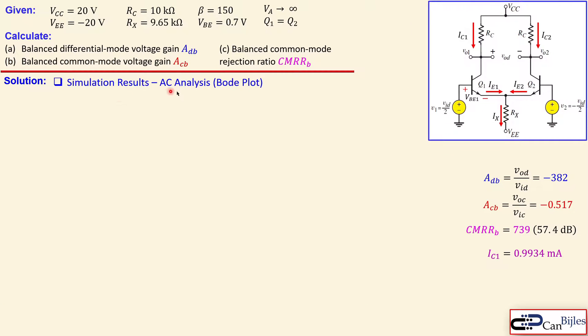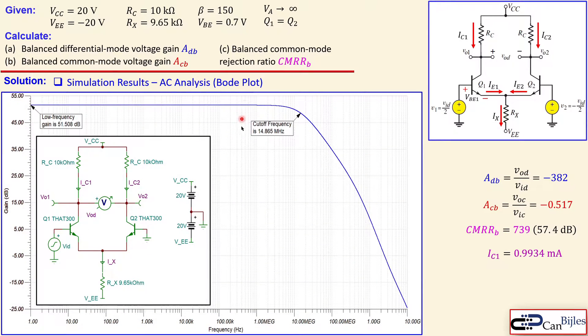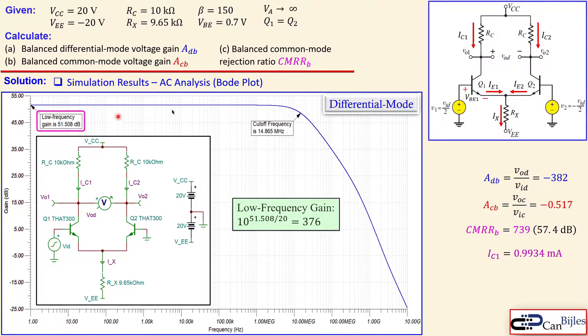Let's go to the simulation results for the AC analysis or the frequency response using the Bode plot. This is the gain for differential mode operation. This is the circuit. What you see is that the low frequency gain is 51.508 dB. There's also a cutoff frequency at approximately 15.9 MHz. If I go from dB to the scalar value, I need to use this formula and that is 376, which is close to 382. So we can say this is perfectly fine.